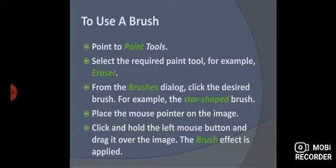From the brushes dialog, click the desired brush — for example, the star-shaped brush. Place the mouse pointer on the image, then click and hold the left mouse button and drag it over the image. The brush effect is applied — the effect of whichever brush you have selected will be applied. I hope these steps are clear to everyone.